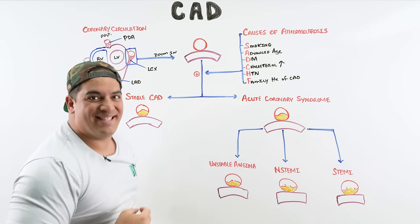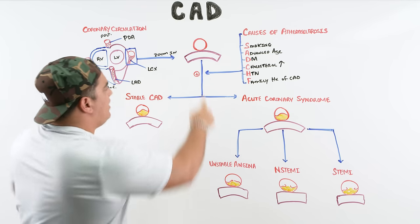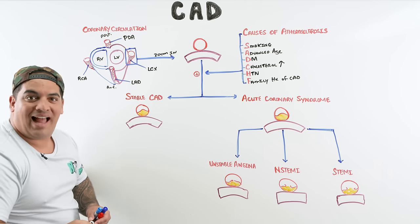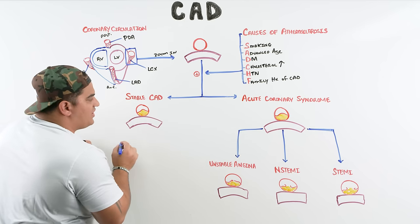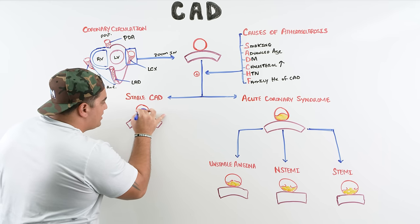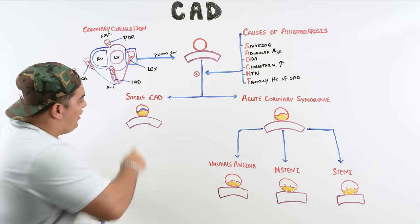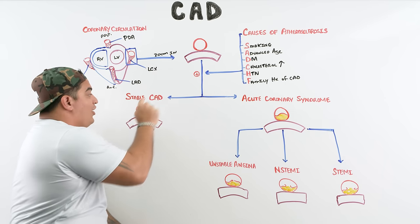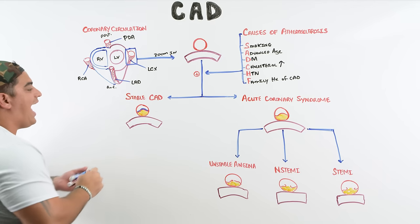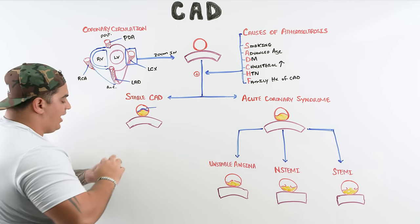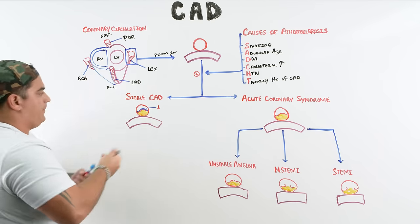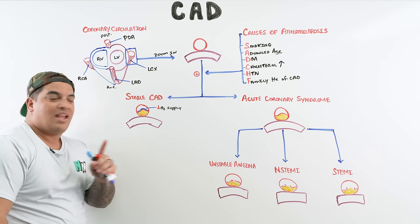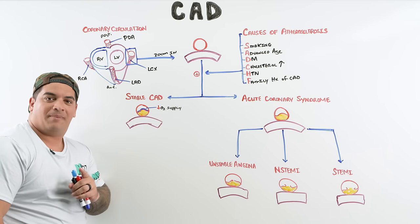When plaque forms, there are two scenarios. In stable coronary artery disease, the plaque is covered by fibrous tissue making it very stable, but the lumen is significantly smaller. This luminal stenosis causes a reduction in oxygen supply to the myocardium. Blood flow through that area is reduced, leading to less oxygen delivered to the heart muscle.